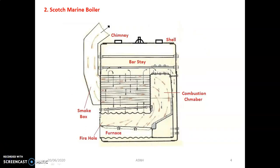The second important fire tube boiler is the Scotch marine boiler. Its main specialty is that it is probably the most popular boiler for applications in the range of 1000 kg per hour and pressure of around 18 to 20 bar. It is compact in size, occupies very less space compared to other boilers, and its construction is quite easy compared to other fire tube boilers.